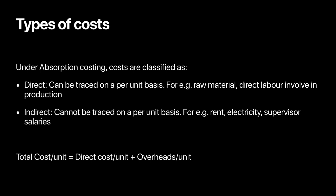Direct costs are those you can trace on a per unit basis, as opposed to indirect costs. Indirect costs are also known as overheads — costs that cannot be traced on a per unit basis, so a firm cannot determine the cost per unit. For example, rent: the landlord charges rent for the entire factory, not per unit produced, so it's a lump sum cost. Similarly, electricity bill and supervisor salary are paid as lump sums and cannot be linked to output per unit.